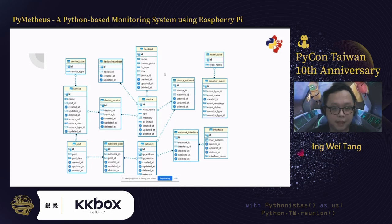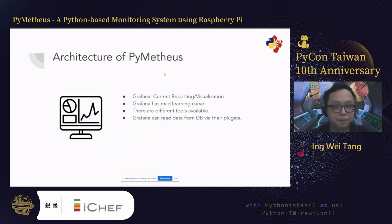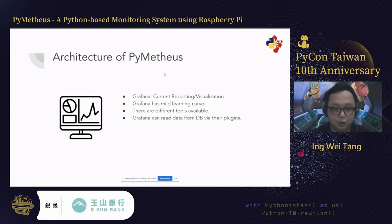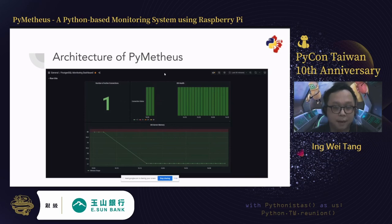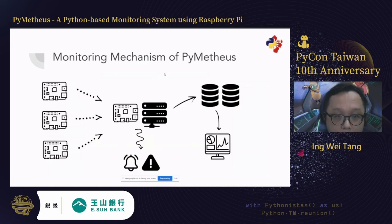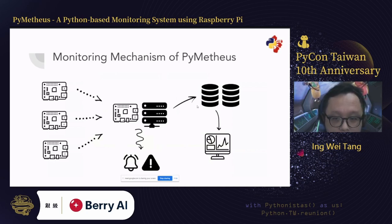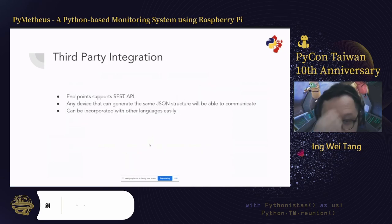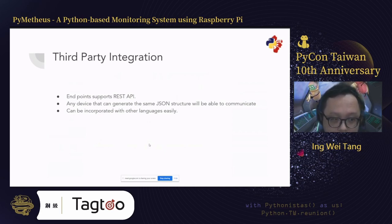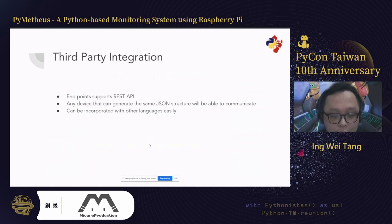This is the ER diagram for the database — it contains two parts: inventory and events. Grafana is the main reporting system, which is easy to use. The monitoring mechanism is simple: the client collects data, sends it to the server, the server records it into the database, and Grafana displays it. Alerting will be added in the future, and I'm also looking at how to integrate with third-party software using JSON-based communication structures.